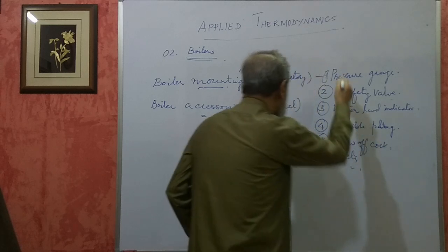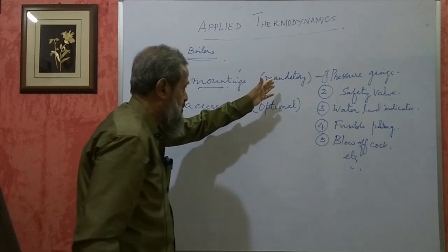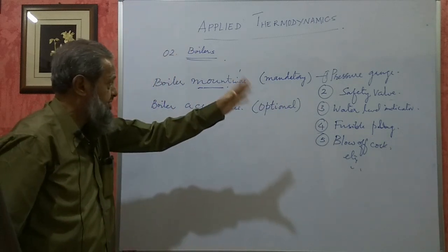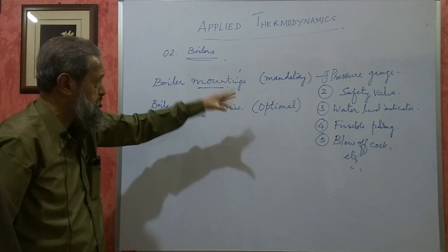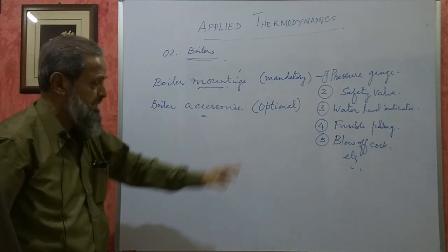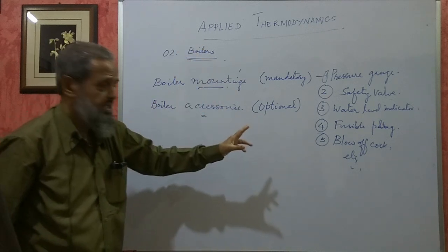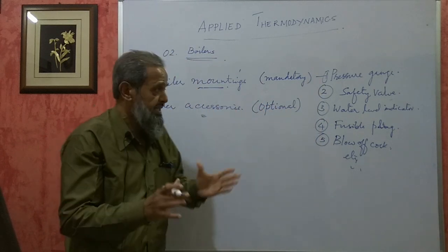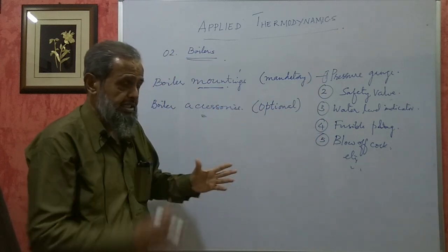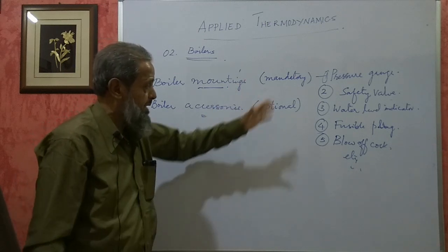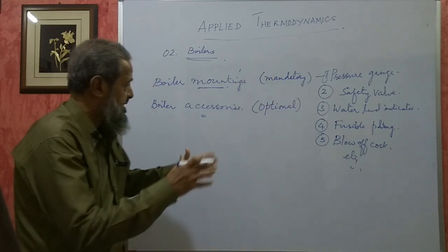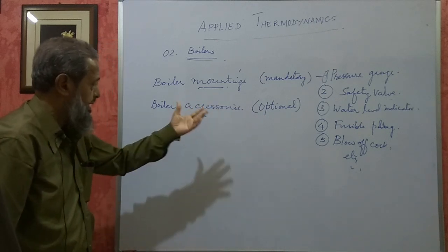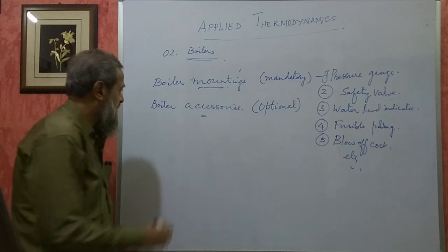These are the important boiler mountings. We are not supposed to run a boiler without those safety devices — they are mandatory and compulsory. The boiler inspector checks all these to see whether they are functioning properly. They conduct a test, generate steam, test all these equipments, and only then give or renew the license for running the boiler.